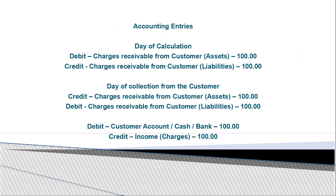On the day of calculation, the entry is: debit 'charges receivable from customers' as an asset for 100 rupees, and credit 'charges receivable' on the liability side for 100 rupees. Both sides of the balance sheet show 100 rupees receivable, indicating we should receive this amount from the customer. When the customer pays, we reverse this — the previously debited asset becomes zero.